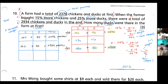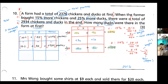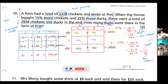Now we find the difference between the two equations by subtracting. 23 minus 20 gives 3 chicken; 5 minus 4 gives 1 duck; and 2934 minus 2376 gives 558. So our difference equation is: 3 chicken + 1 duck = 558.